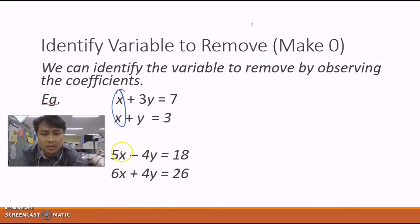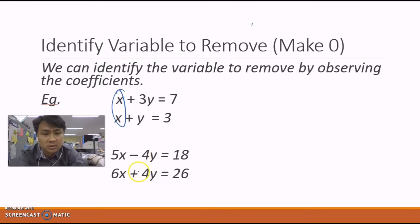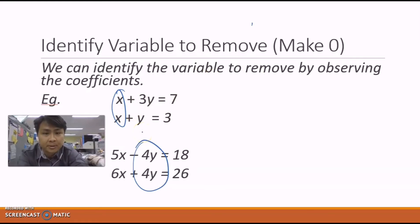In the second example, the x coefficients are 5 and 6 — not the same, so x cannot be removed by addition or subtraction. Looking at y, the coefficients are negative 4 and positive 4. Despite the different signs, the absolute value is the same (4), so we can use addition or subtraction to make y zero. Therefore, we choose y as the variable to remove.